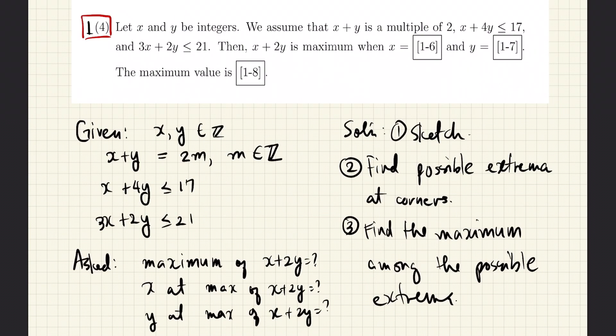Then we are asked to find the maximum of the value of X plus 2Y and the value of X and Y at the point when X plus 2Y is maximum. To solve this we first sketch the given conditions.